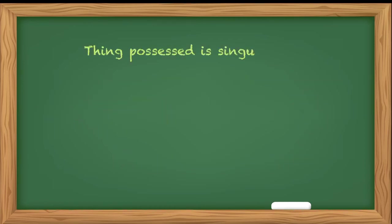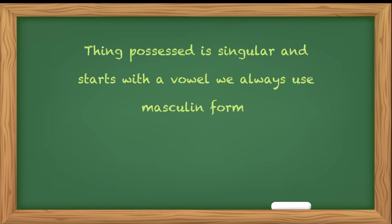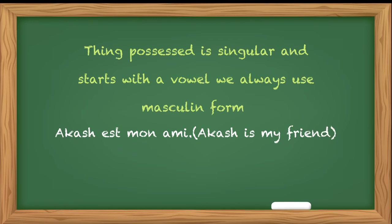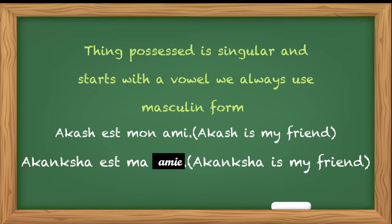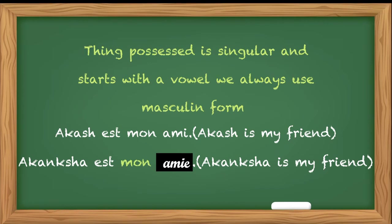One more thing to note: if the thing possessed is singular and starts with a vowel, we always use the masculine form even if the thing possessed is feminine. For example: 'Akash est mon ami' — Akash is my friend, where ami is masculine singular. Now 'Akanksha est ___ amie.' Here amie is feminine singular but starts with a vowel. Ideally it should be ma amie, but according to this exception, we will not use ma — we will use mon. So: Akanksha est mon amie. I hope you have understood.